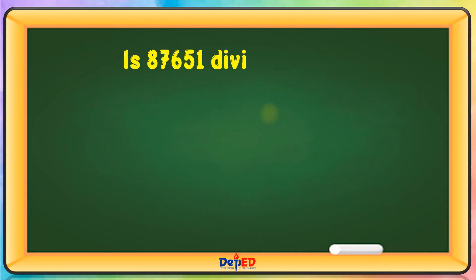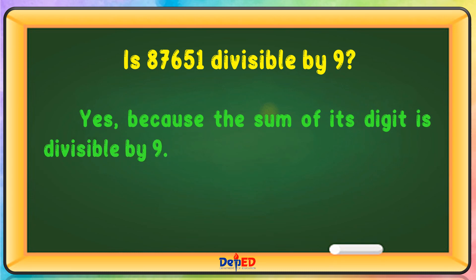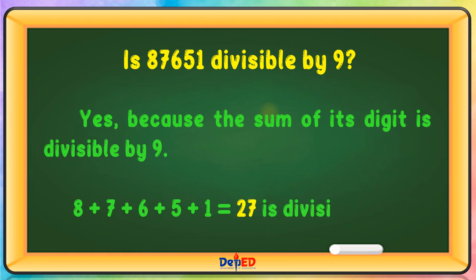Is 87,651 divisible by 9? Yes, because the sum of its digits is divisible by 9. 8 plus 7 plus 6 plus 5 plus 1 equals 27, which is divisible by 9.